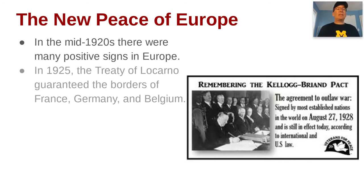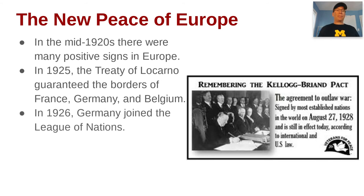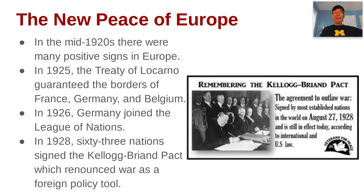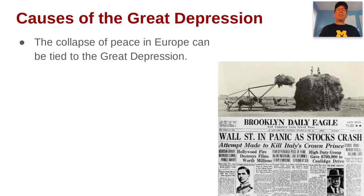Europe was settling into a little stability. The mid-1920s showed some positive signs: the Treaty of Locarno guaranteed the borders between France, Germany, and Belgium — so they would not invade each other, in theory. In 1926, Germany joined the League of Nations. And in 1928, 63 nations around the world signed the Kellogg-Briand Pact, with the idea of outlawing war as a tool of foreign policy. But this all starts to fall apart because of the Great Depression, and this collapse really does lead to the collapse of peace in Europe.